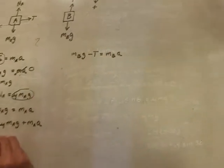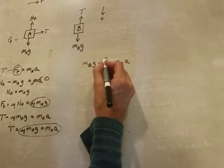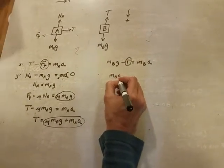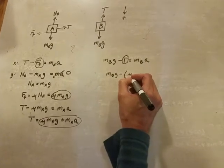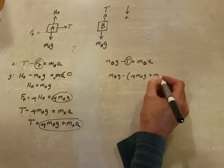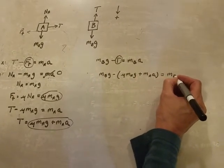So I know what tension is. I'm going to take this right here and plug it in for this. So MBG minus mu MAG plus MAA is equal to MBA.